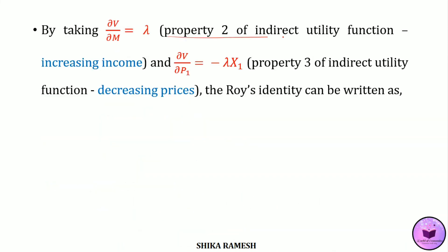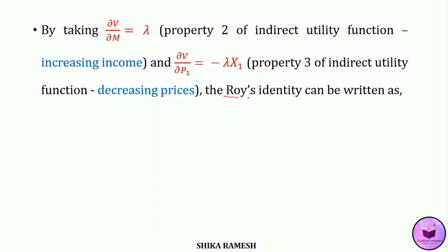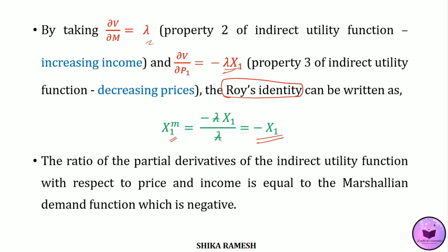From Property 2, we derived ∂v/∂m = lambda (a positive value), and from Property 3, we derived ∂v/∂p1 = −lambda·x1. Substituting these into Roy's Identity, we get xm1 = −(−lambda·x1) / lambda = −x1 after lambda cancels. This means the ratio of the partial derivatives of the Indirect Utility Function with respect to the price of a good and consumer's income equals the Marshallian demand function, which yields a negative value.